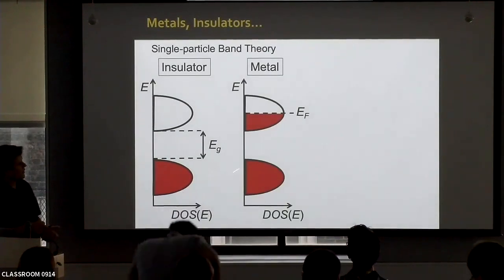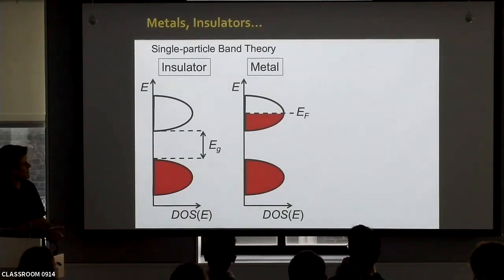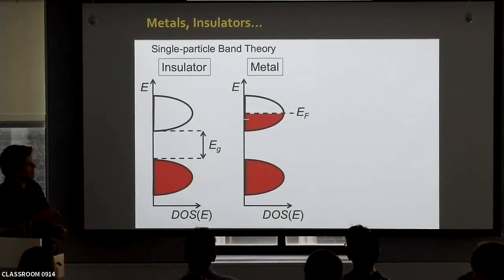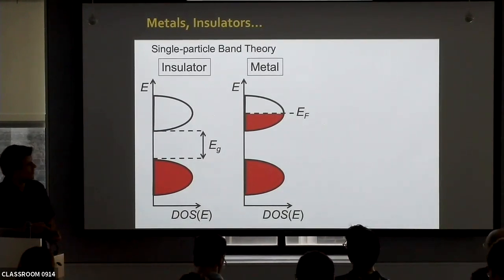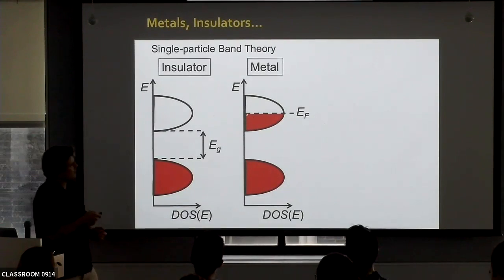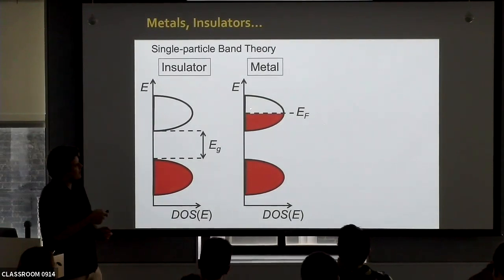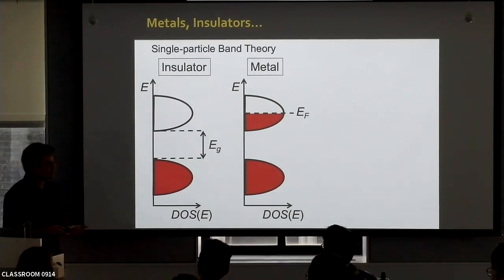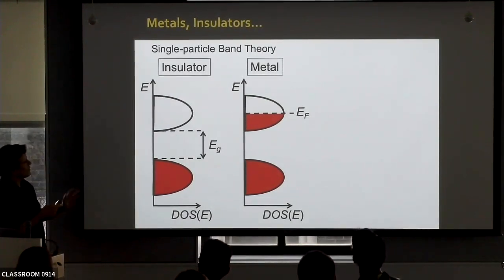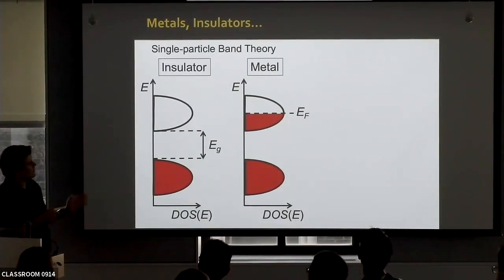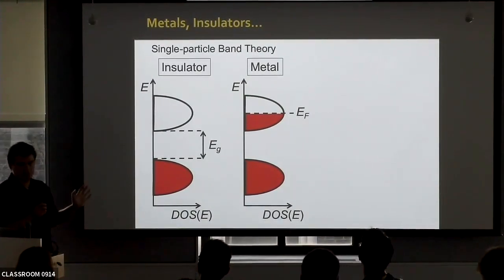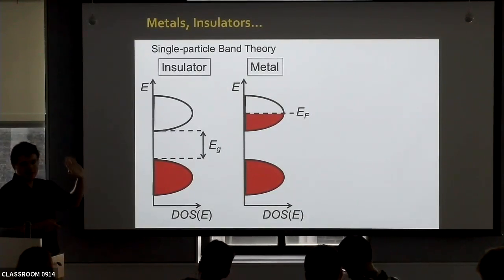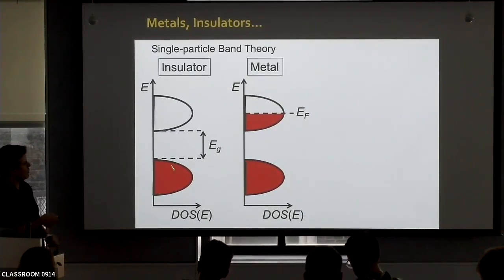If, on the other hand, you have the same density of states but you put a number of electrons such that one of these bands is partially occupied, then you have free energy states at very small energies available for electrons to be excited via an electric field or temperature, and this thing can conduct. So from a single-particle point of view, you pretty much have metals or insulators, depending on whether your Fermi level is somewhere in a band or a band is completely full.